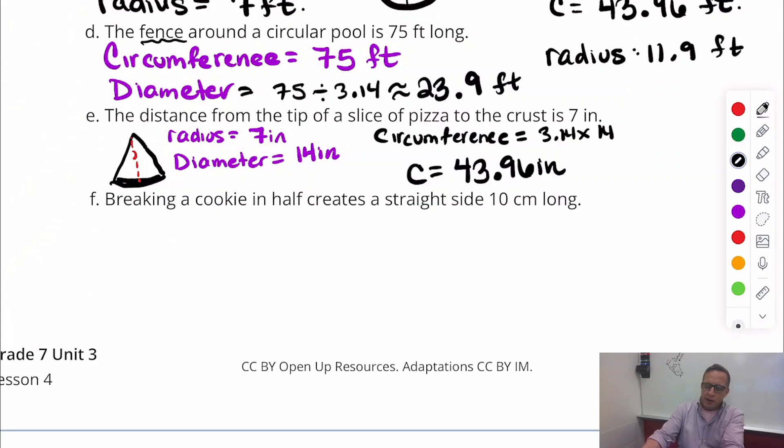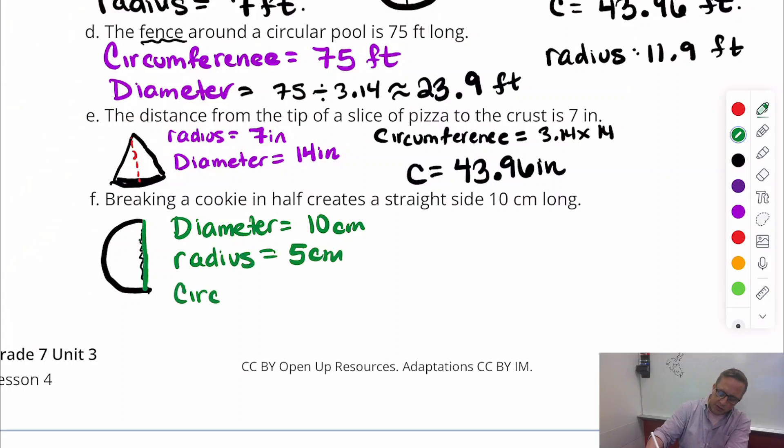Breaking a cookie in half creates a straight side 10 centimeters long. We're describing what appears to be diameter. So diameter equals 10 centimeters. The radius is half that, 5 centimeters. The circumference before it was cut in half was 3.14 times diameter, which is 31.4 centimeters.